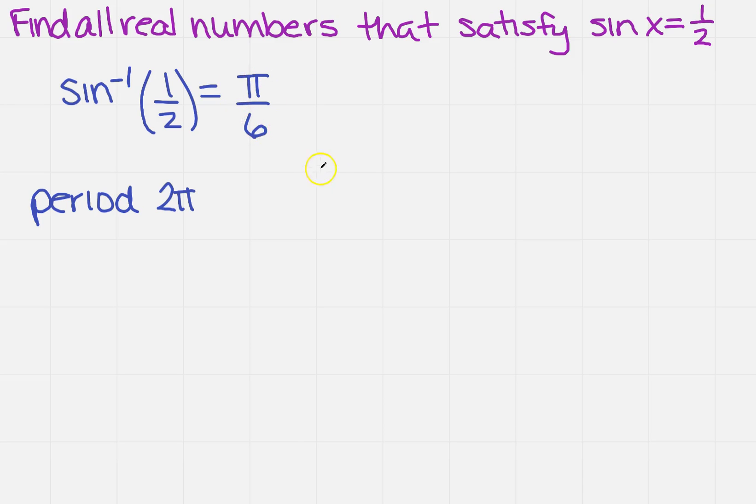So for the first one here, I'm going to get π/6 plus—remember you take 2 times π times k for any k that is an integer.